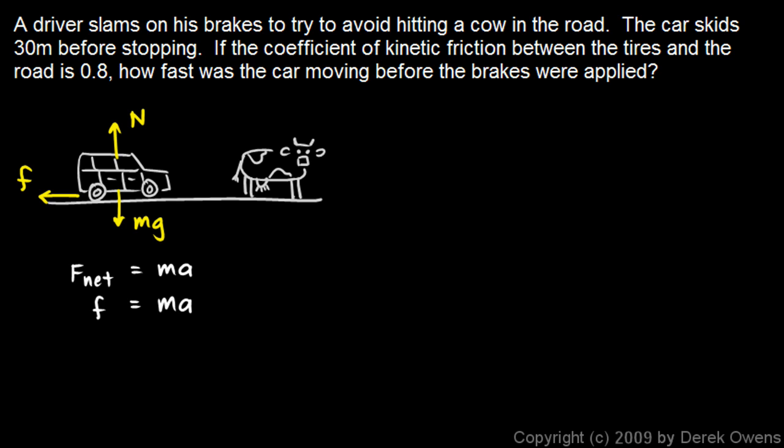So I have μN is equal to ma. And N in this problem is equal to mg, so I can say μmg equals ma. And the m's cancel out, so the mass of the car doesn't matter. I would get the same result if it was a huge car or a little tiny car. But I'm left with μ times g is equal to a.